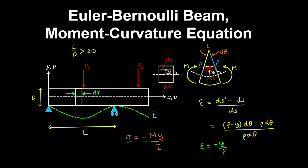For a linear elastic material, the Young's modulus is the stress over the strain. Therefore, the strain is the stress over the Young's modulus, which means that the strain is equal to minus m y over EI.